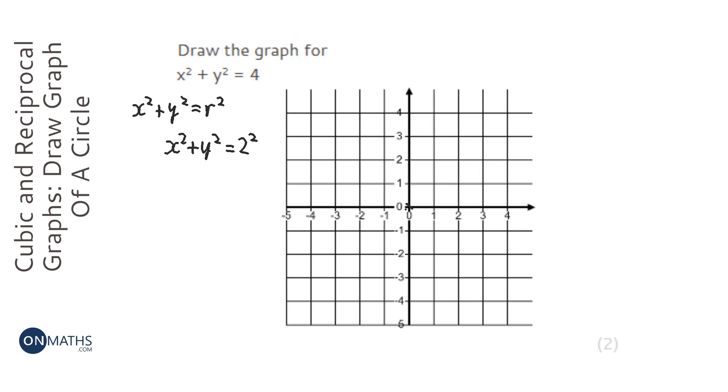So it's from the origin, which is here, and it will pass through, it will have a radius of 2.